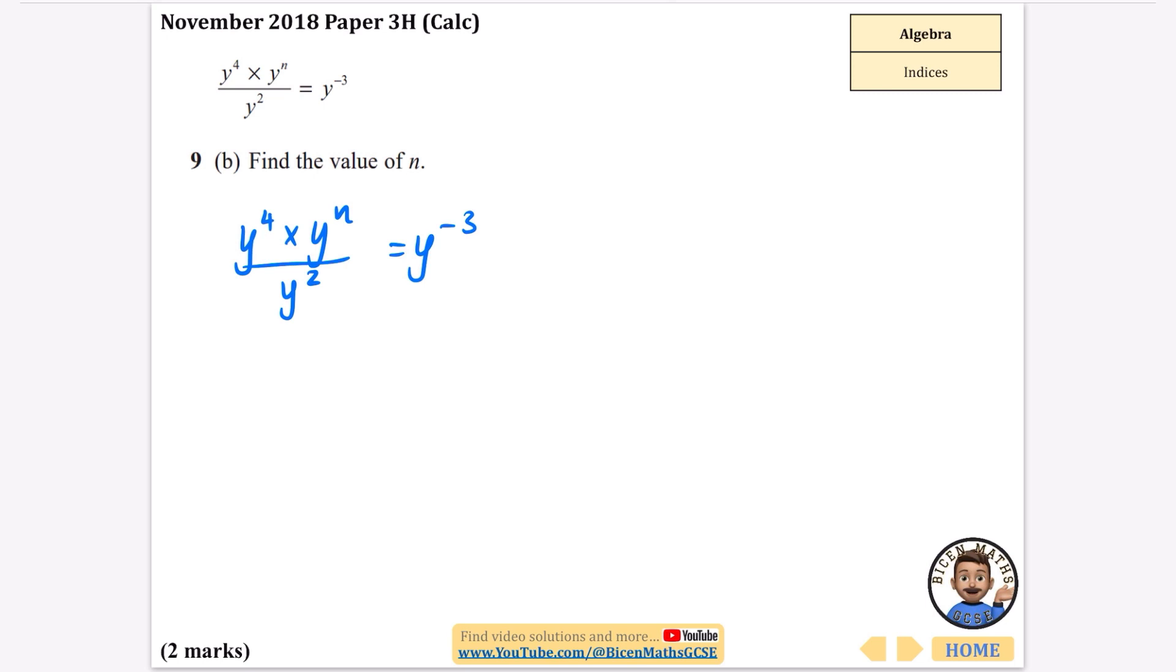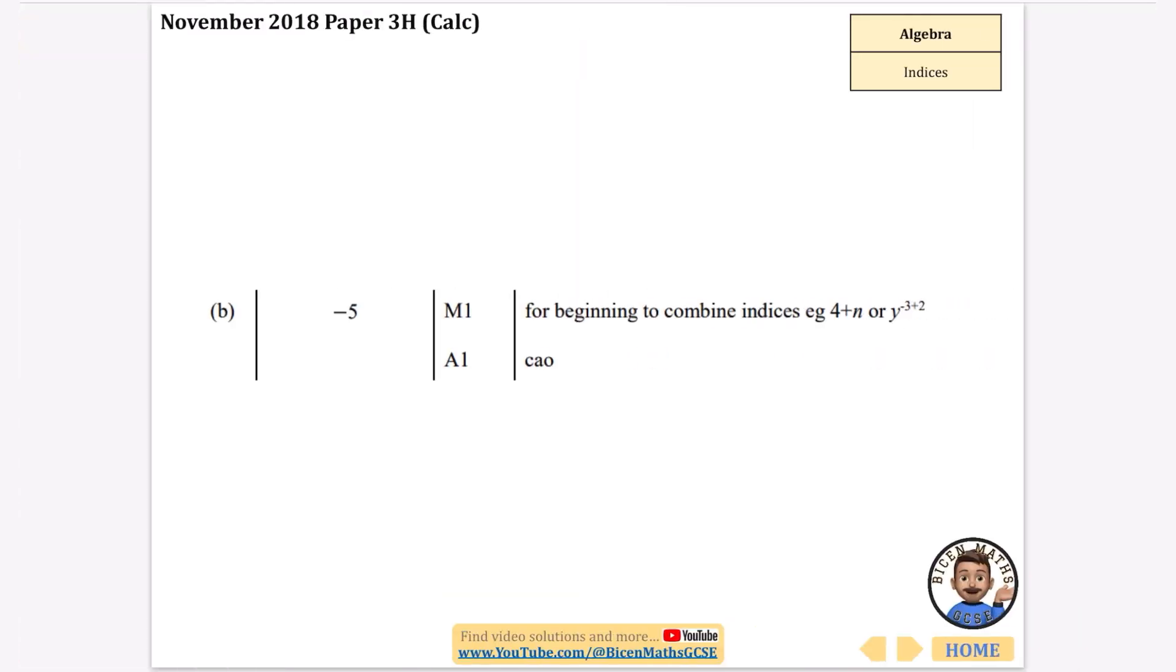So what we're going to be doing, we're saying that 4 plus n take away 2 is equal to minus 3. So all I need to do is add the 2 to the other side. So 4 plus n is minus 1, minus 3 plus 2 is minus 1, and then I'm going to take away 4, and we get the answer that n is minus 5. So that was me just looking at the powers there, and we have got the answer of n being minus 5.